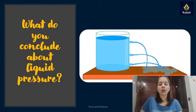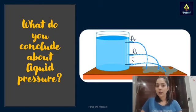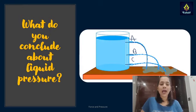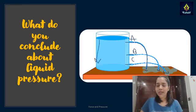Let's go back to the presentation to conclude about liquid pressure. There is a container with three openings — A, B, and C. C has more depth compared to A. Water is coming out and from B it covers more distance, and from C it covers much more distance. So liquid pressure at C is greater, confirming that as depth increases, liquid pressure also increases.